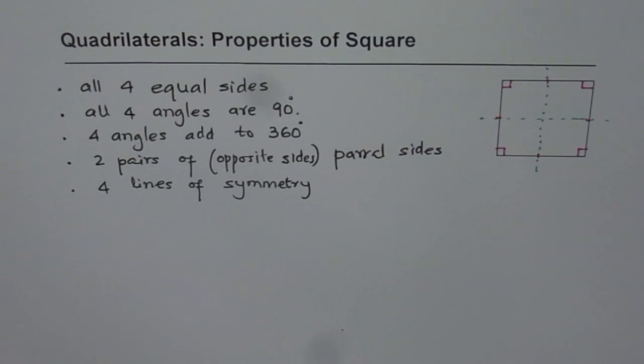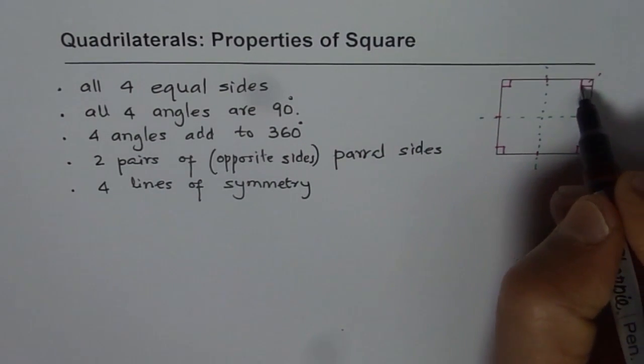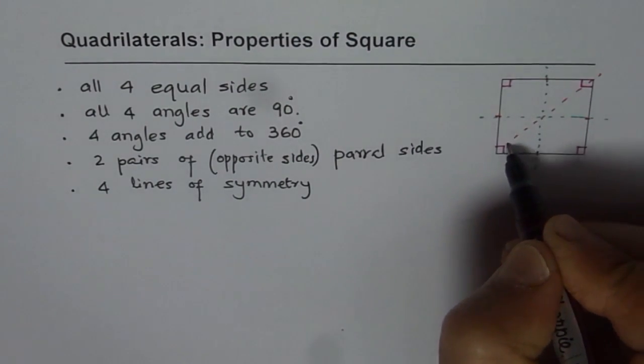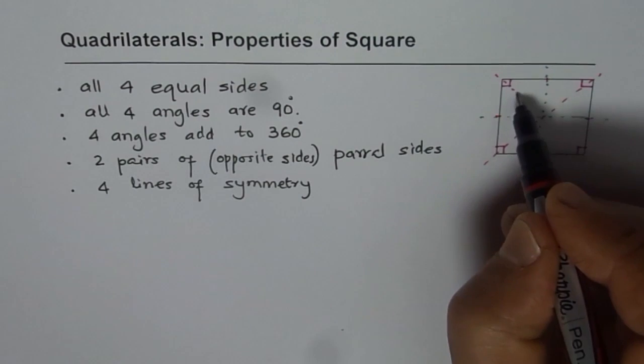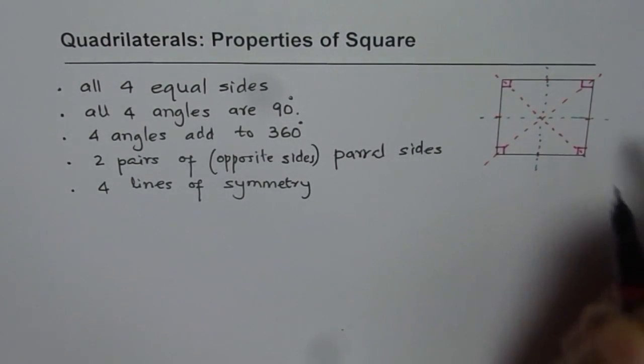How do we get four lines of symmetry? How about the diagonals? Okay, so if I fold it along the diagonals, it will fold. So that makes it four lines of symmetry.